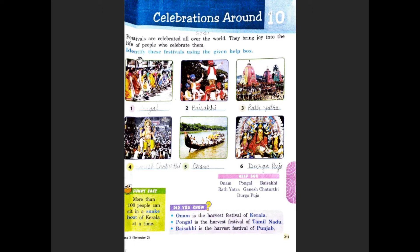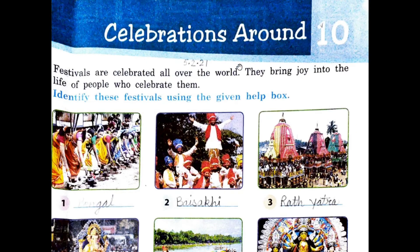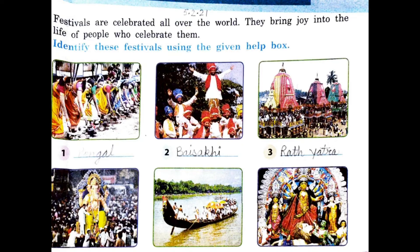Identify these festivals using the given help box. The first one is Pongal. It is the harvest festival of Tamil Nadu. The second one is Baisakhi. It is the harvest festival of Punjab.